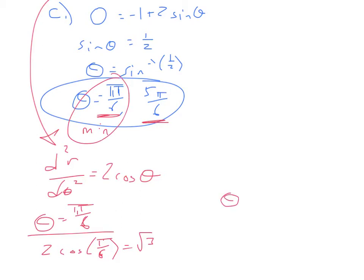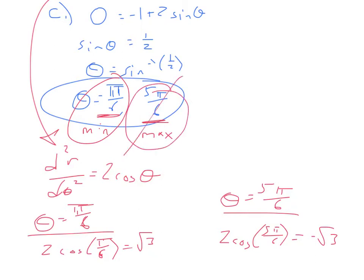For the other one, if I do θ = 5π/6, I'll have 2 times the cosine of 5π/6. Cosine of 5π/6 is -√3/2, so this ends up being -√3. Because that's negative, my radius is concave down, which means this one is a maximum, and therefore not what I'm looking for.